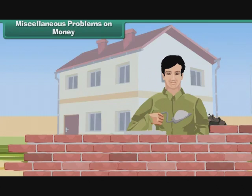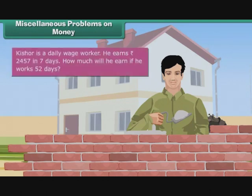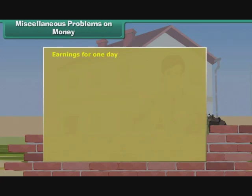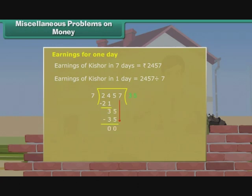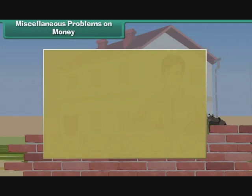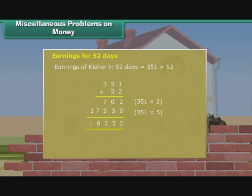Miscellaneous Problems on Money. Now let us apply both the concepts together in solving money problems. How much will Kishore earn if he works 52 days? First, we work out the earnings of Kishore for one day. Earnings of Kishore in seven days is 2,457. Earnings of Kishore in one day is 2,457 divided by 7, which equals 351 rupees. Now we work out his earnings for 52 days. Earnings of Kishore in 52 days is 351 into 52, which equals 18,252 rupees.